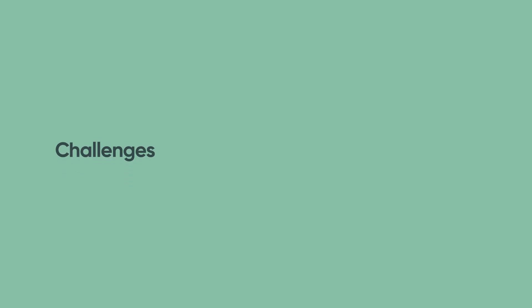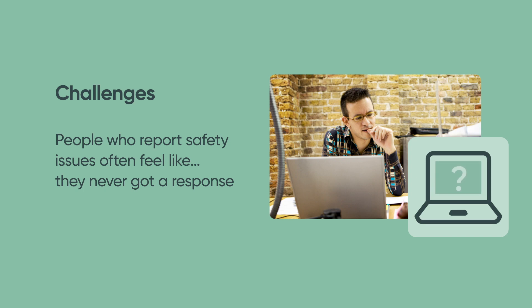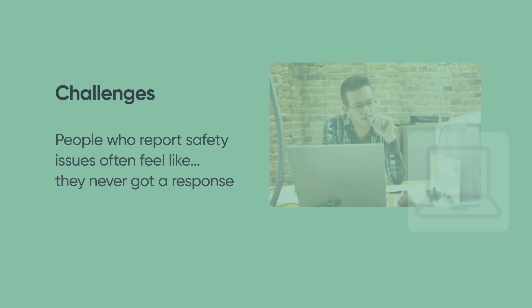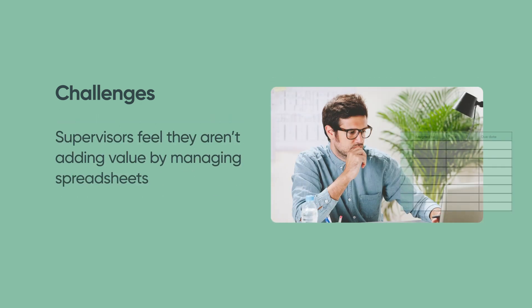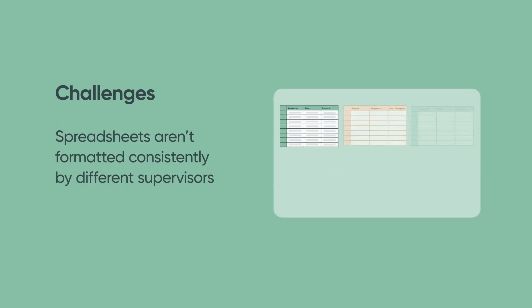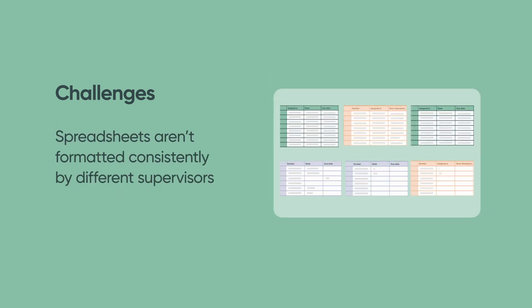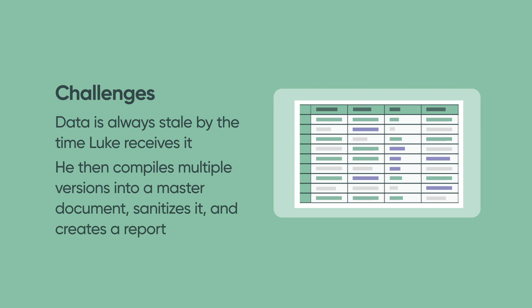Here are some of the challenges his team faces. People who report safety issues often feel like their request went into a black hole because they never got a response from their supervisor or technician. Technicians can't see their individual work queues and can't make direct updates when the work is completed. Supervisors feel they aren't adding value by managing spreadsheets. And spreadsheets aren't formatted consistently by different supervisors. The data is always stale by the time Luke receives it from supervisors. He then compiles multiple versions into a master document, sanitizes it, and creates a report.